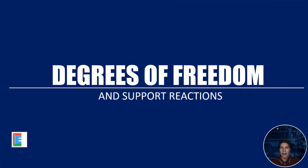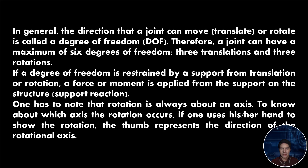The term degrees of freedom is extremely important yet often misunderstood. Degrees of freedom refers to the six possible movements that can occur at a point, and whether or not these movements are free to move or restrained. In general, the direction that a joint can move — translate or rotate — is called a degree of freedom, labeled as DOF. A joint can have a maximum of six degrees of freedom.